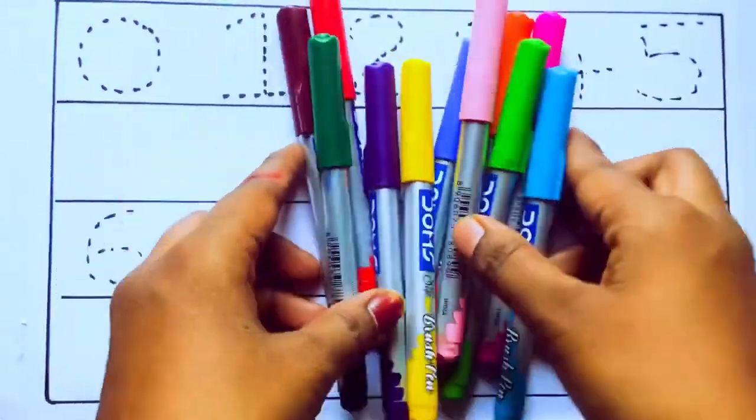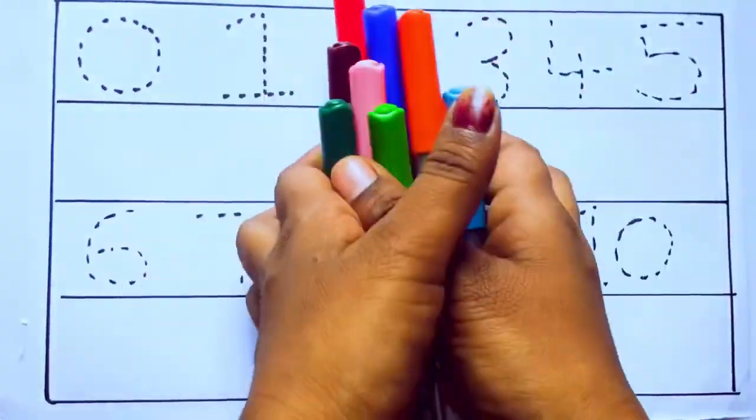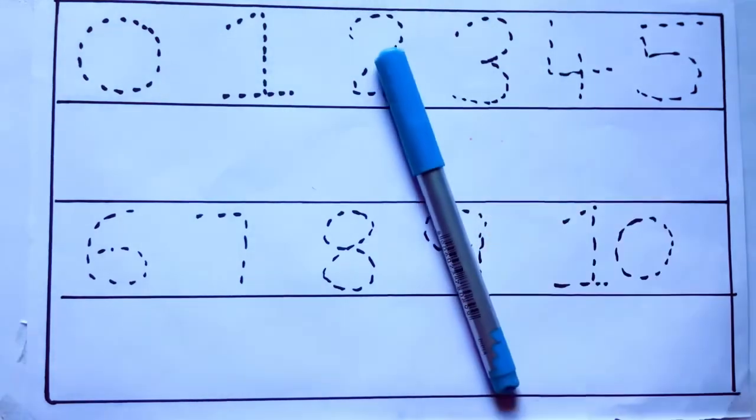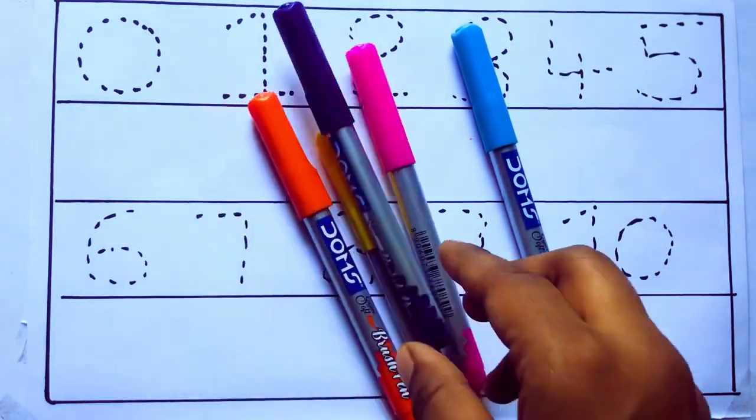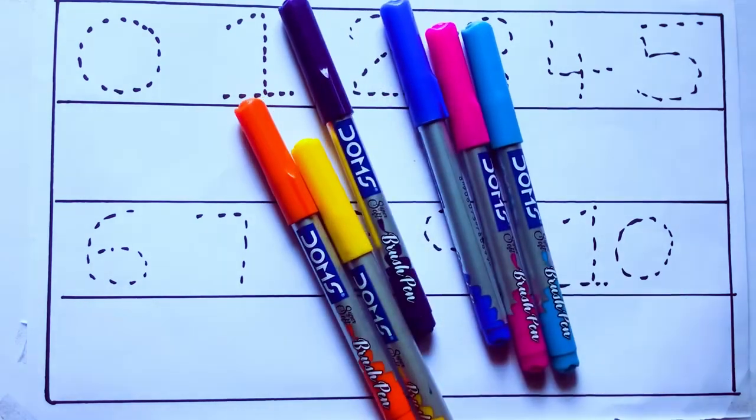Let's learn some colors. These are all the color pencils. Let's learn the names. Sky blue color, pink color, yellow color, orange color, violet color, blue color.